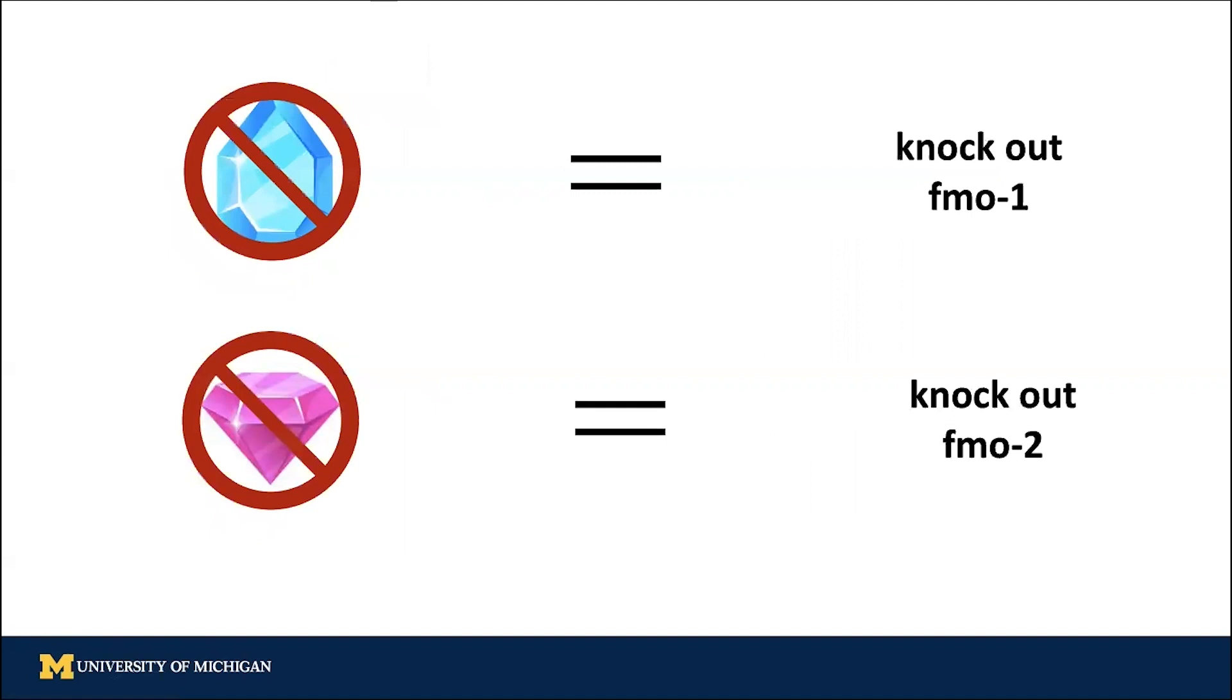When I present this little explosion symbol next to the gem, it means that the genes are overexpressed, and when I put the forbidden symbol on the gems, it means that genes are knocked out or absent.